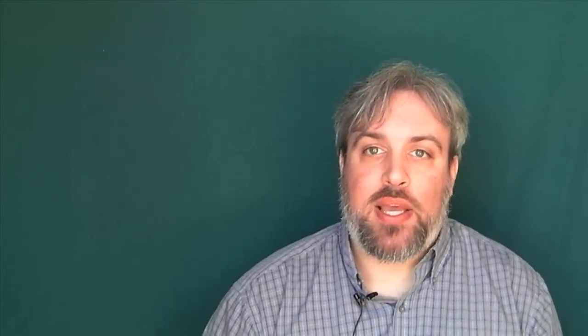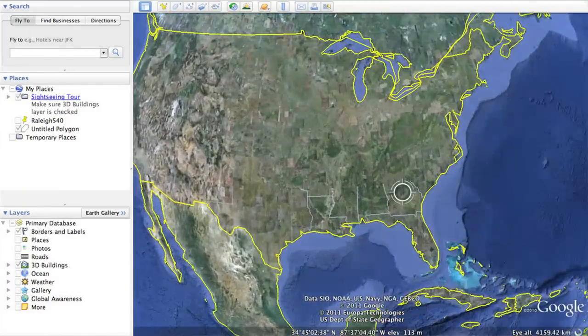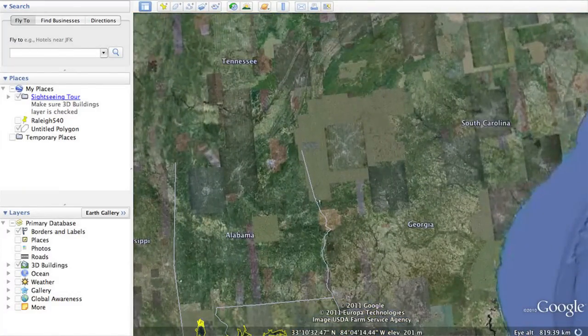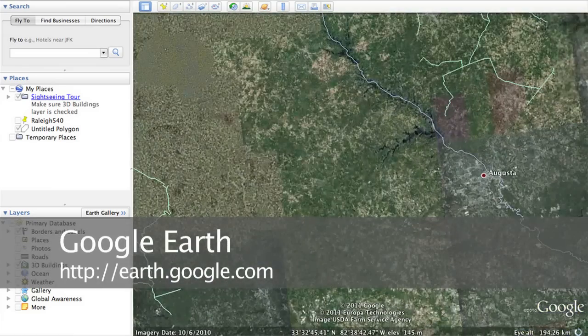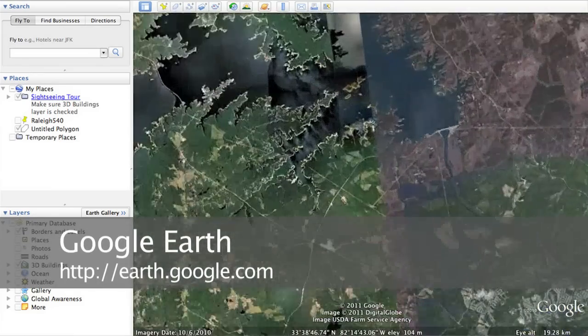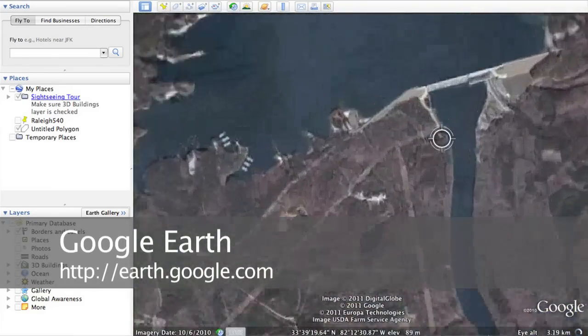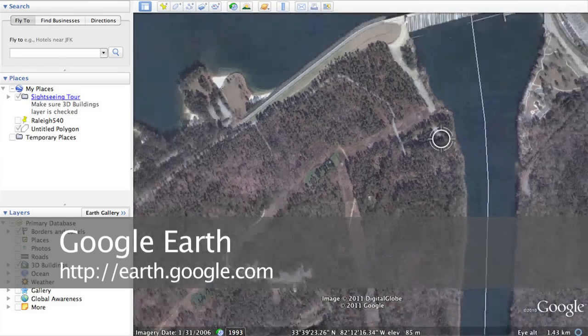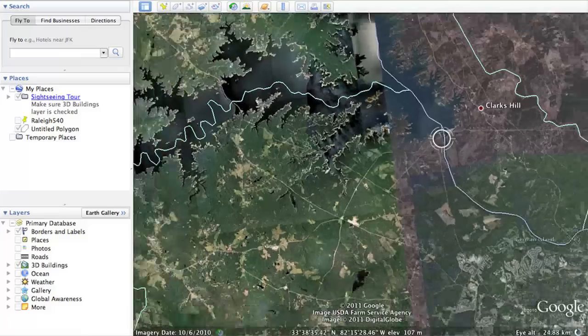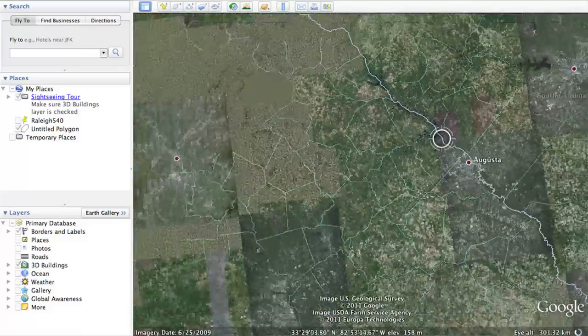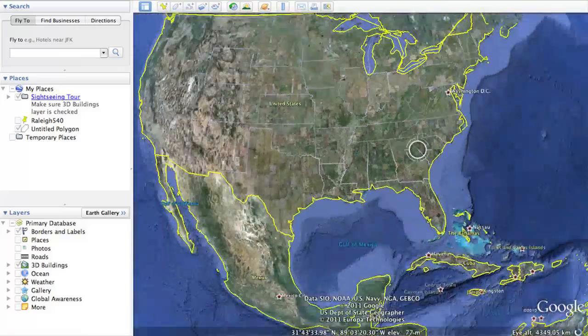Some of these images are coming from satellites, some are coming from airplanes, but all of them, or a lot of them at least, end up in things like Google Maps, Google Earth, Bing Maps. A lot of these online resources that we use every day to find someone's house, to help us figure out where we're going to go for vacation, and any range of reasons we might be using these technologies.